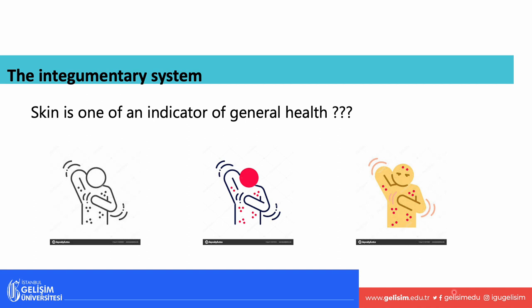If you look at somebody's eyes and they're looking very puffy, maybe they're not getting enough sleep — bags underneath the eye could be due to too much work. Puffy eyelids or bags under the eyes may be a sign of what's going on physiologically. A person not being able to get enough sleep could be another indicator of stress levels being high.